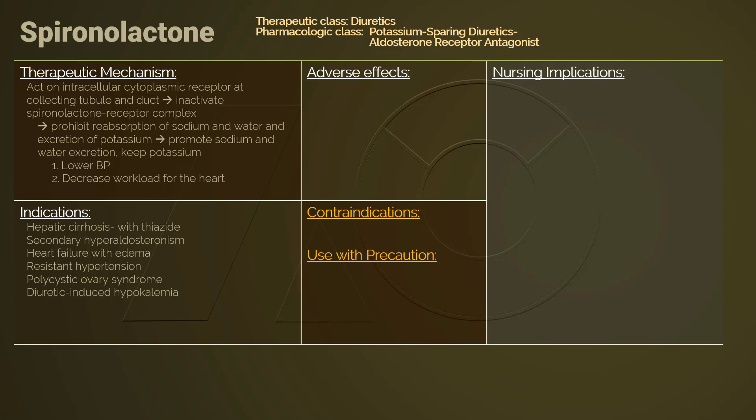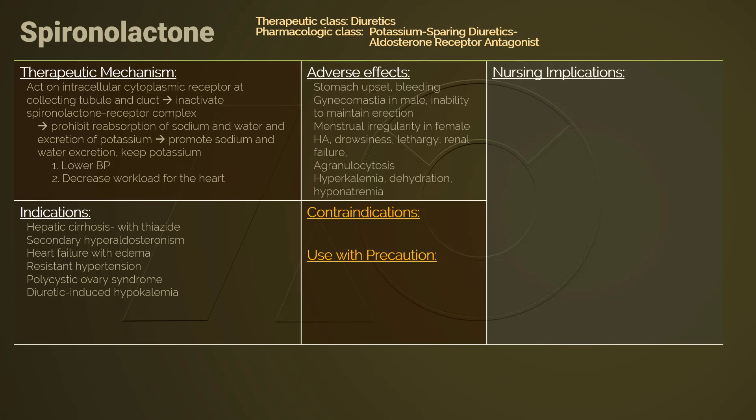Adverse effects of spironolactone include GI effects such as stomach upset and GI bleeding. Hormonal adverse effects include gynecomastia and inability to maintain erection in males, and menstrual irregularities in females.